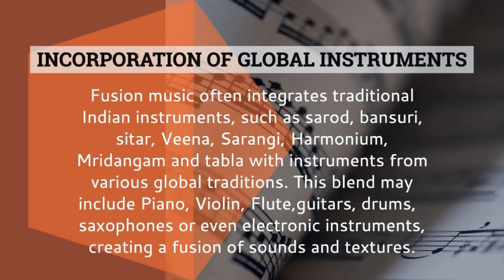Fusion music often integrates traditional Indian instruments such as sarod, basuri, sitar, veena, sarangi, harmonium, mridangam and tabla with instruments from various global traditions. This blend may include piano, violin, flute, guitars, drums, saxophones or even electronic instruments, creating a fusion of sounds and textures.